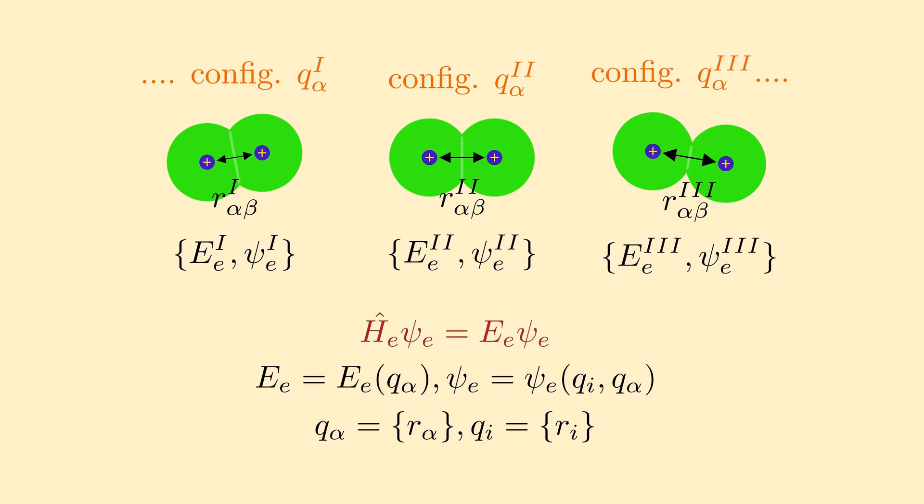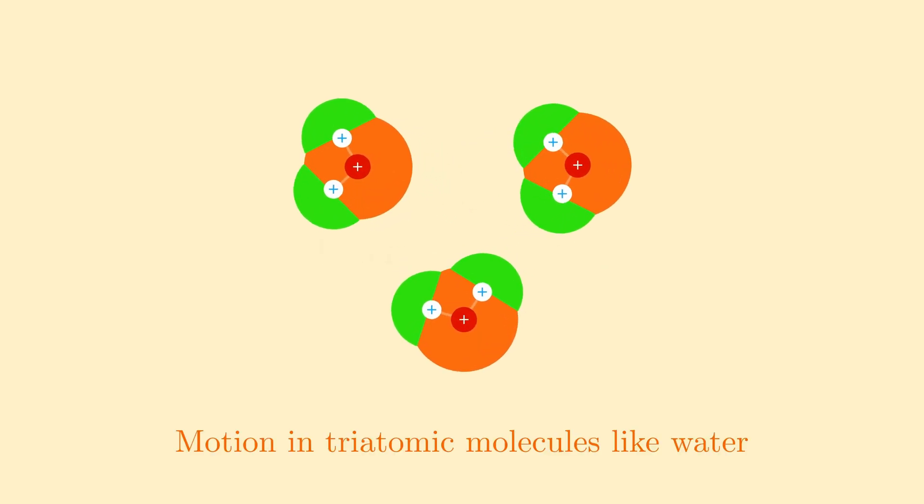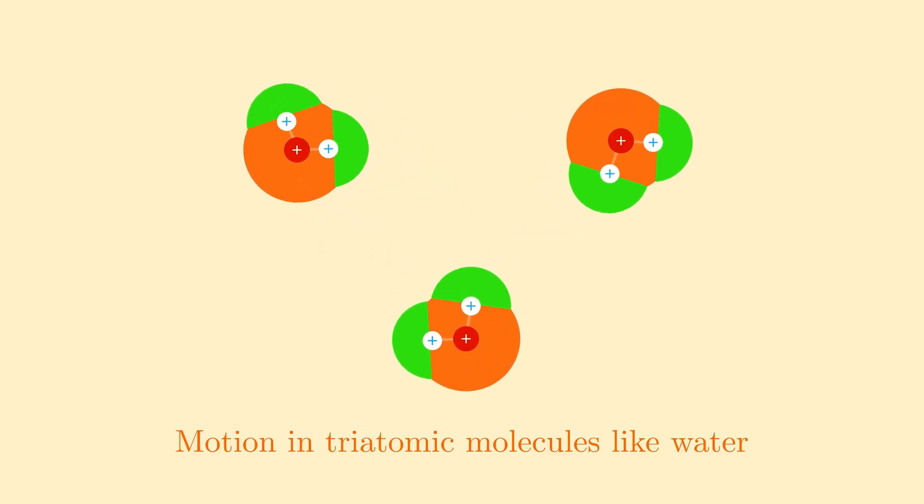The electronic wave functions and energies do depend parametrically on the nuclear coordinates. Assuming that we have solved the electronic Schrodinger equation, which by the way is not trivial, in the second step, we consider the nuclear motion.